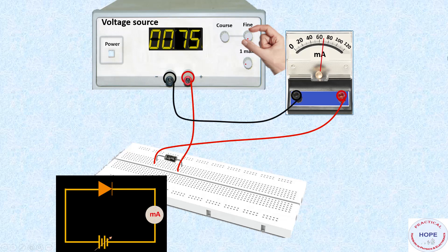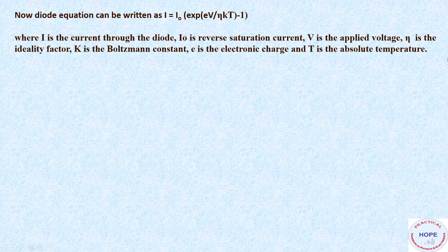Now the diode equation can be written as I equals I0 exponential of EV by eta kT minus 1, where I is the current, I0 is the reverse saturation current, V is the voltage, eta is the ideality factor, K is the Boltzmann constant, E is the electronic charge and T is the absolute temperature.